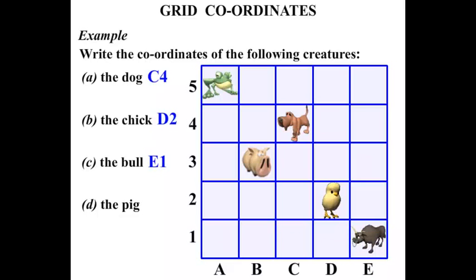Now what about the pig there? Can you spot the pig? There he is. He's in the B column. He's in row 3. B and 3. What are we going to write? Did you say B3? Very good.